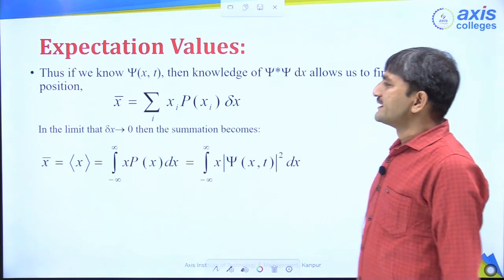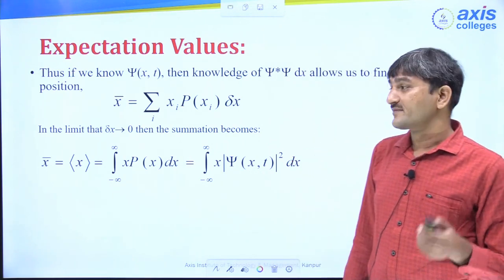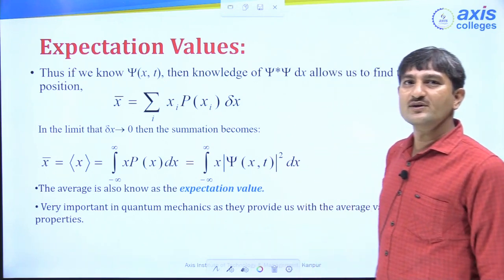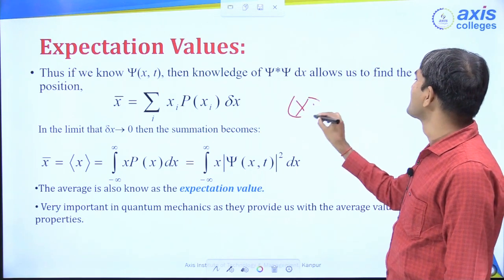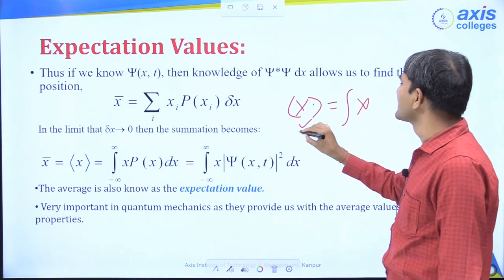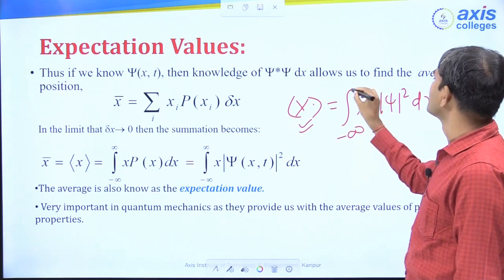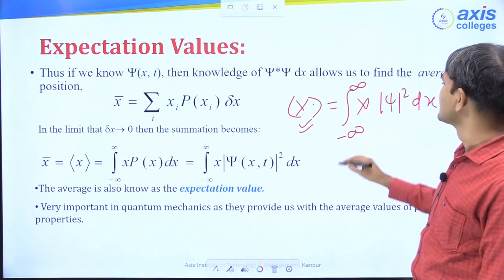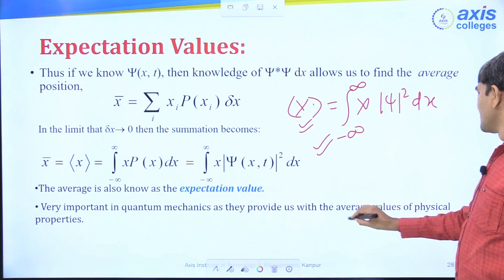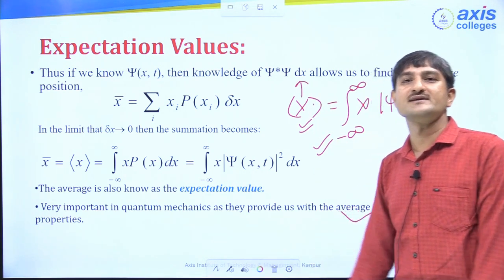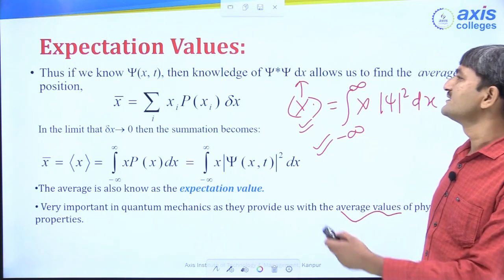In quantum mechanics, if we know the wave function ψ and want to find the expectation value (average value) of any physical quantity, for example position x, we compute: ⟨x⟩ = ∫ x·|ψ|²·dx over the given range. This expectation value is very important in quantum mechanics since quantum mechanics gives probabilistic results. We can find the expectation value of position, momentum, and other physical quantities.